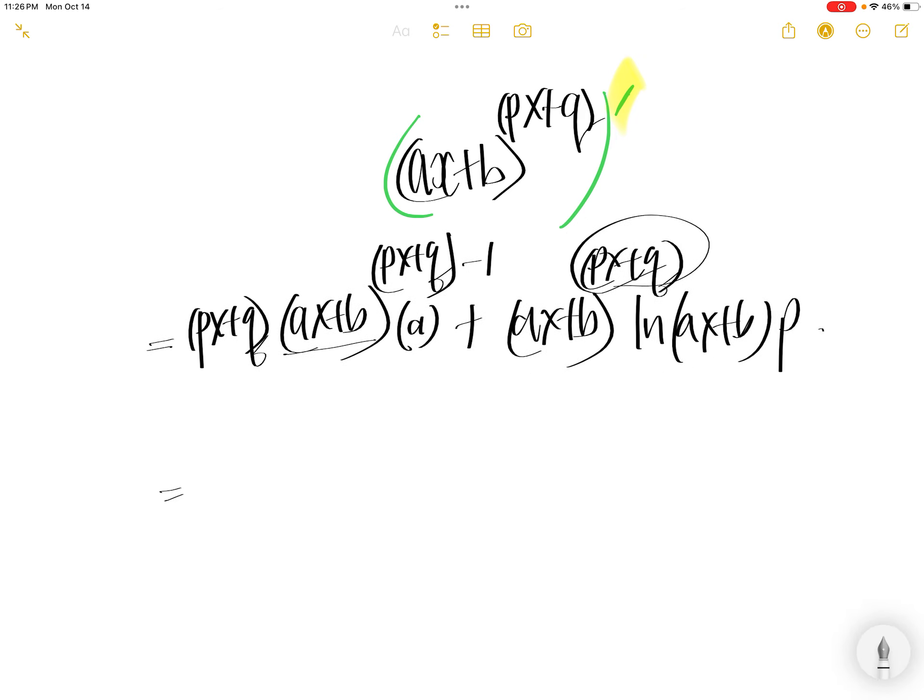Now, pull out the common factor. We can pull out AX plus B to the power of PX plus Q. Pull out this one and then you have this A times PX plus Q, and then you have another piece AX plus B to the power of negative 1.